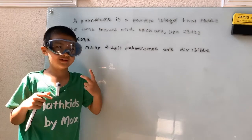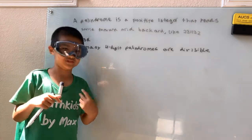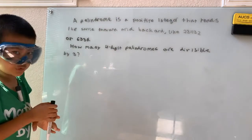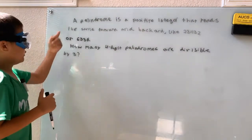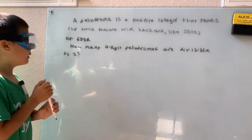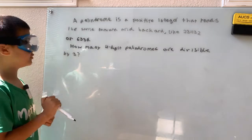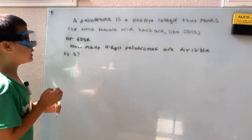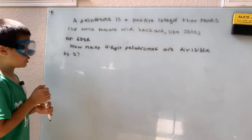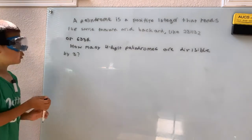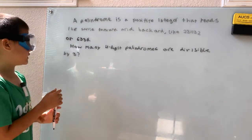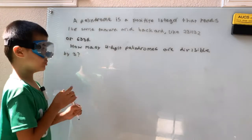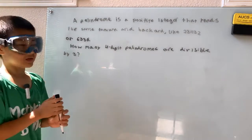So of course we're gonna do a problem. A palindrome is a positive integer that reads the same forward and backward, like 231132 or 6336. How many four-digit palindromes are divisible by three?